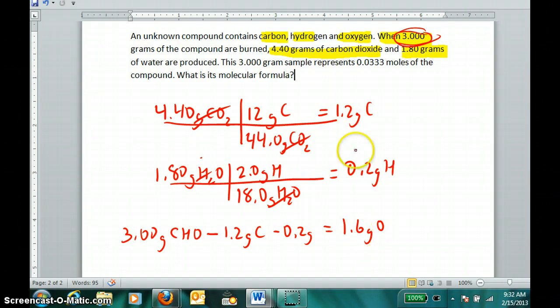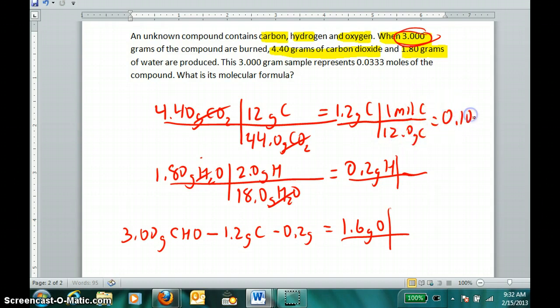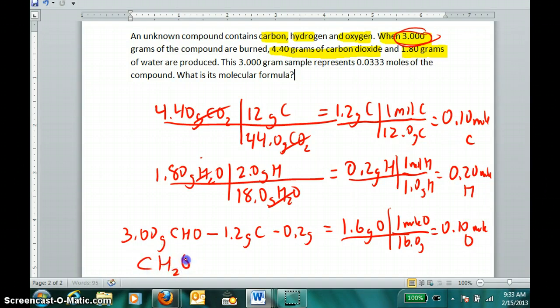Now that I have mass ratios of all 3 elements, I can find the molar ratios. An empirical formula is a ratio of numbers of things, not how much, but how many. One mole of carbon atoms is 12 grams, meaning there was 0.1 mole of carbon. One mole of hydrogen is 1 gram, so there was 0.2 moles of hydrogen. One mole of oxygen is 16 grams, so we had 0.10 moles of oxygen. The lowest whole number ratio of carbon to hydrogen to oxygen is CH2O, a 1 to 2 to 1 ratio.